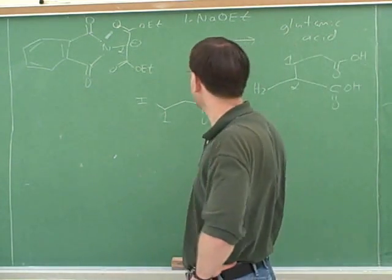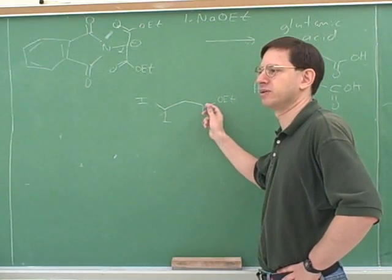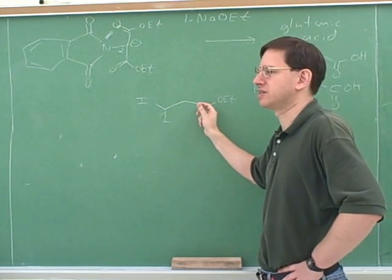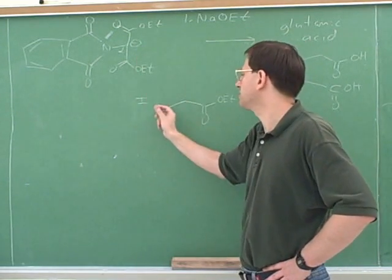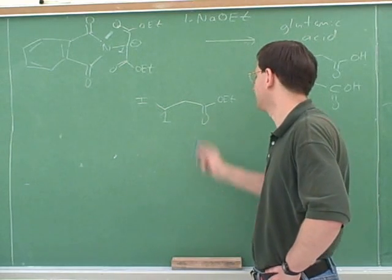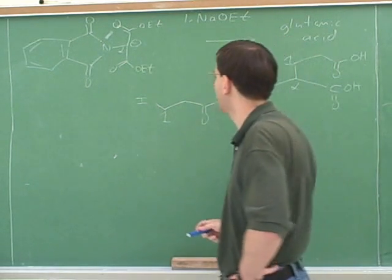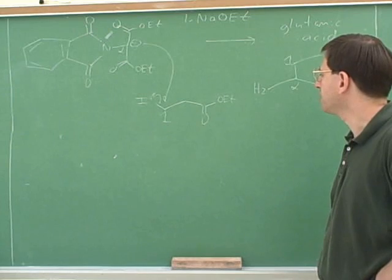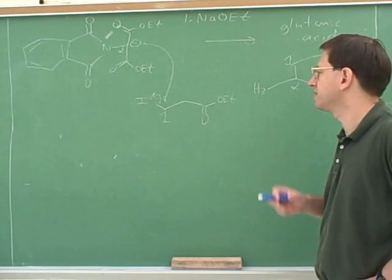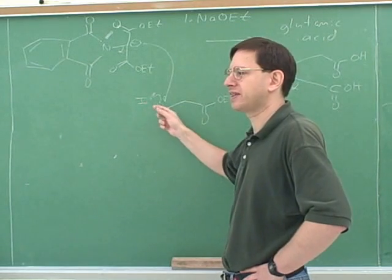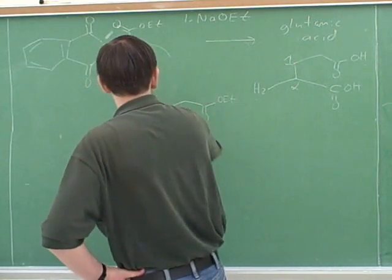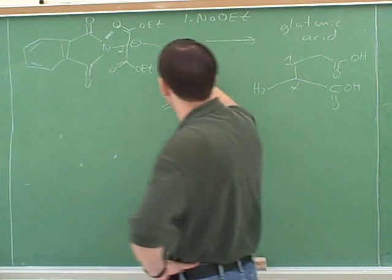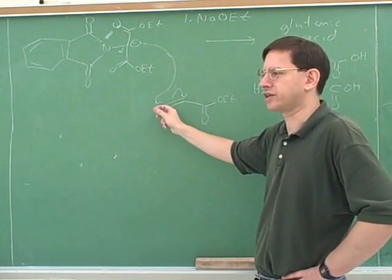Enolates don't seem to do nucleophilic attack on carboxylic acid derivatives — the textbook never worries about that, so we won't worry about this enolate attacking the carbonyl and doing an addition-elimination reaction. Enolates can do SN2 reactions, but not attacks on carboxylic acid derivative carbons. Now let me show you how the book did this — they didn't actually put an alkyl halide here. They used an alternative approach: they put a double bond there and treated this as an electrophilic carbon.